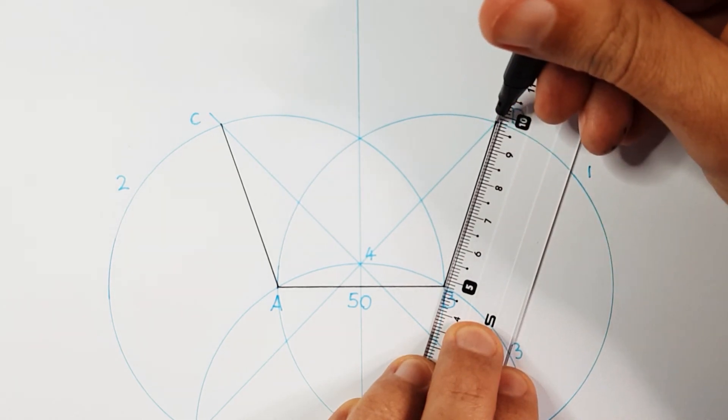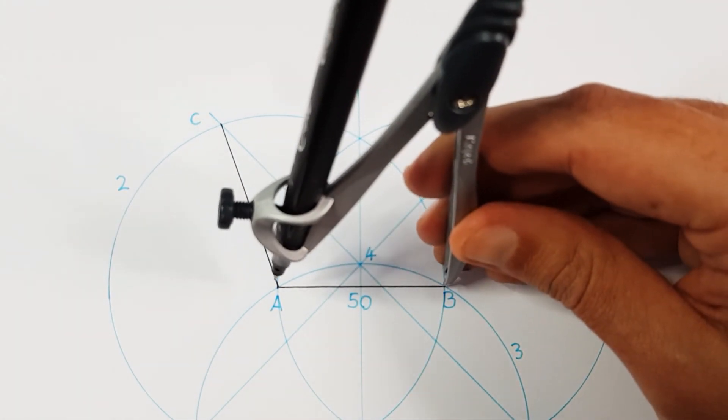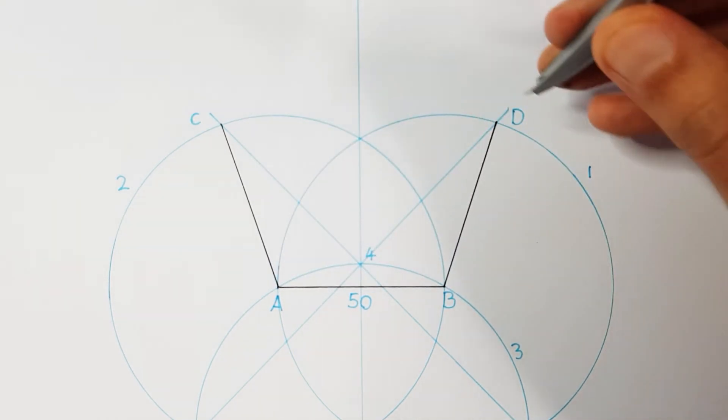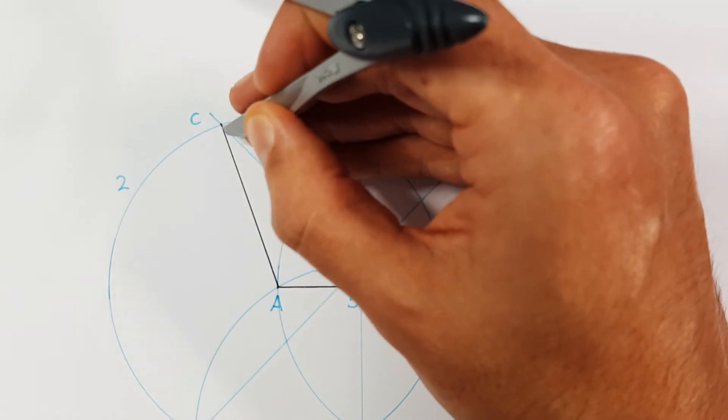All we have to do now is to determine the last point. Take your compass and adjust it to the side length of your pentagon. Use points C and D to determine that last point on your middle point method.